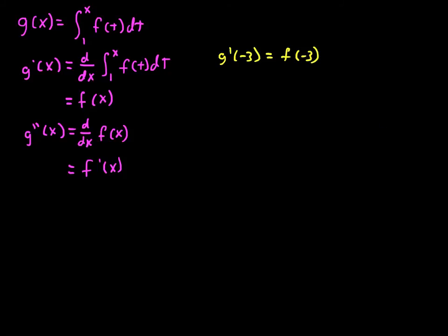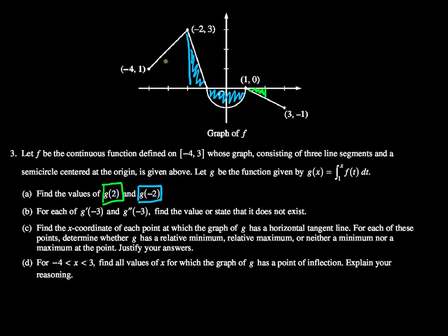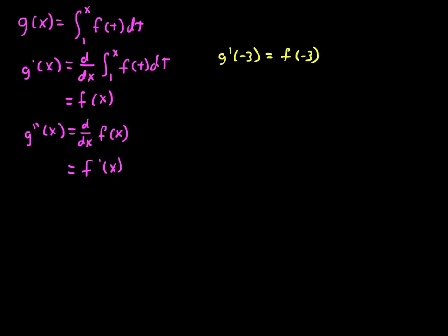And we look at this, we go, this is a graph of f, we go to negative 3, go up to our curve, it's straight in this section, and we see that it has a value of 2, so f of negative 3 is 2.